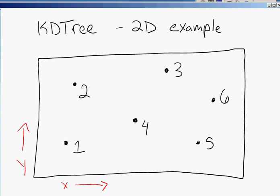I'll show an example here of a two-dimensional KD tree. Now you see here, I've got these points laid out, 1, 2, 3, 4, 5, 6, and basically all that we are going to do is just split them first in the X dimension.